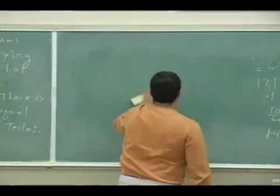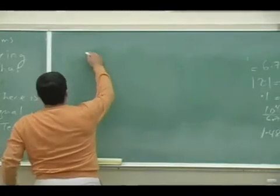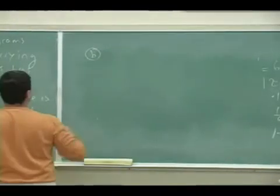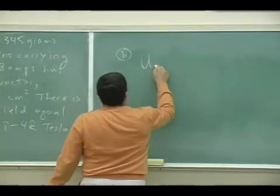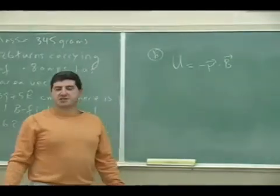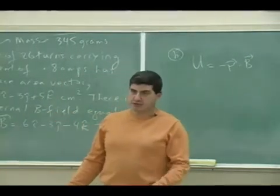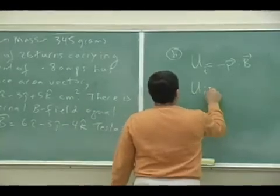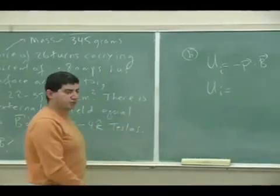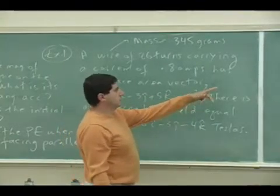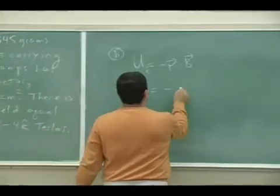So now part B, what is the initial potential energy? The potential energy, remember, is the negative mu dotted into B, not the cross product. So the initial potential energy is simply you just take the dot product of the area vector with the magnetic field.